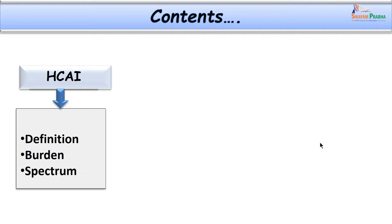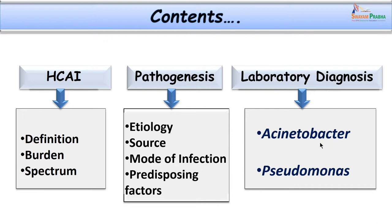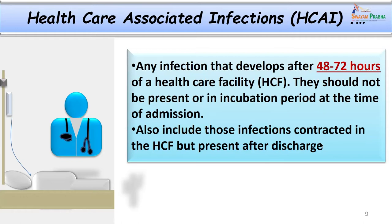Now after having discussed the case of hospital acquired infection, let us discuss this topic under the following headings: what are hospital acquired infections or healthcare associated infections as they are renamed in recent times. We will see the definition, the burden of such infections, and the different types. We will also look into their pathogenesis and detailed laboratory workup, considering two important organisms — Acinetobacter as isolated in our index case, and Pseudomonas.